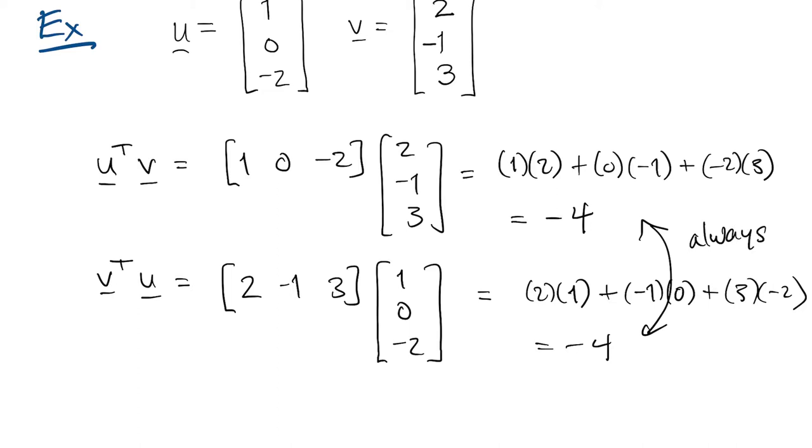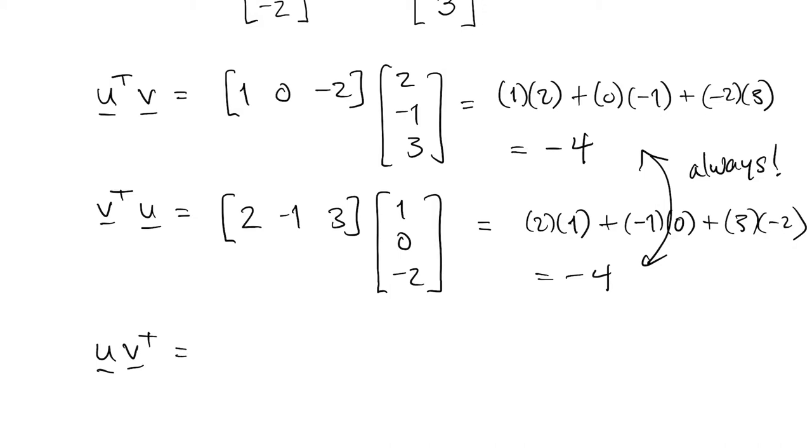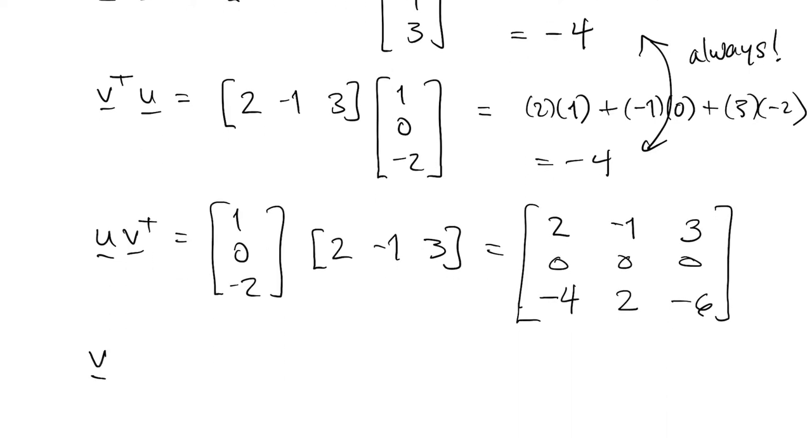So you get the same result. Now we have an outer product, uv transpose. That's column times row. The first vector tells you a multiplier for each row. The second one tells you the multiplier in each column. First we just get a copy of 2, negative 1, 3. Then we get 0 times that vector. Then we get negative 2 times that vector in the third row.